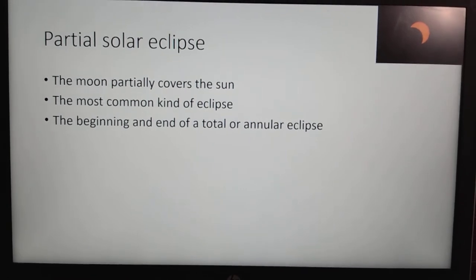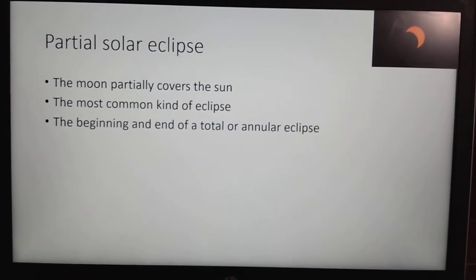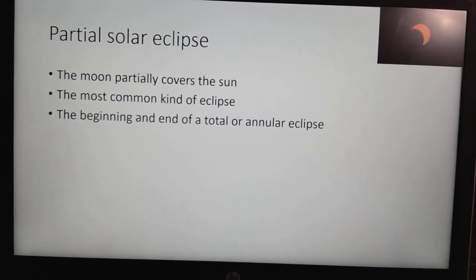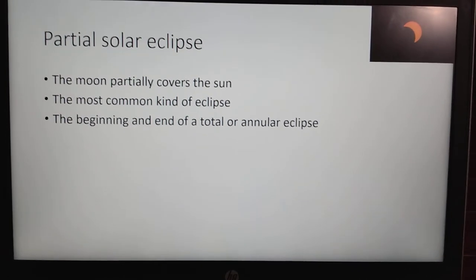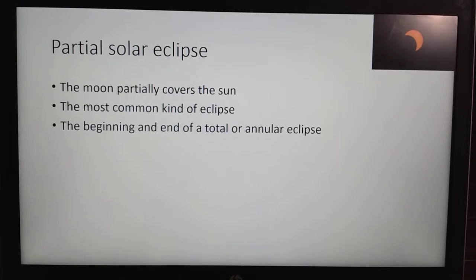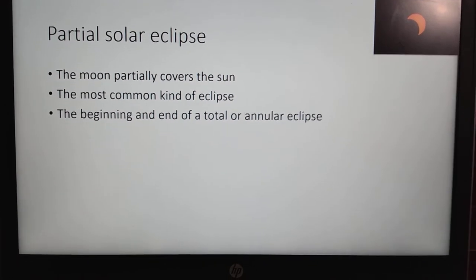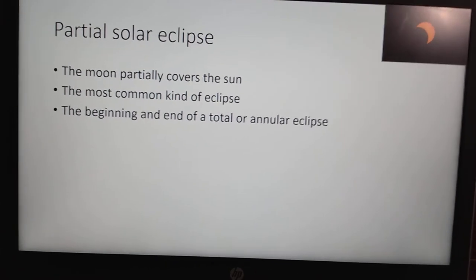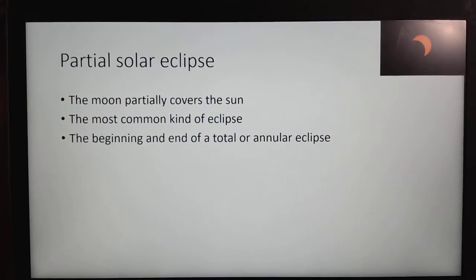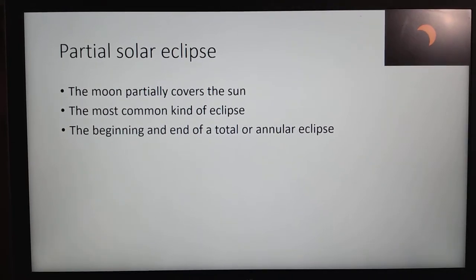What do I mean by that? Well, whenever you have a total or annular eclipse, when the eclipse begins, you will see a partial eclipse. And when the eclipse is ending, you will also see a partial eclipse.